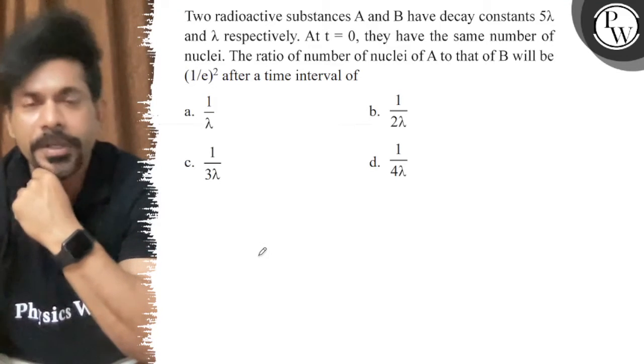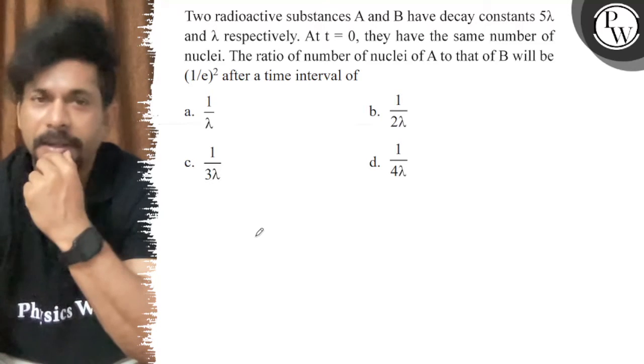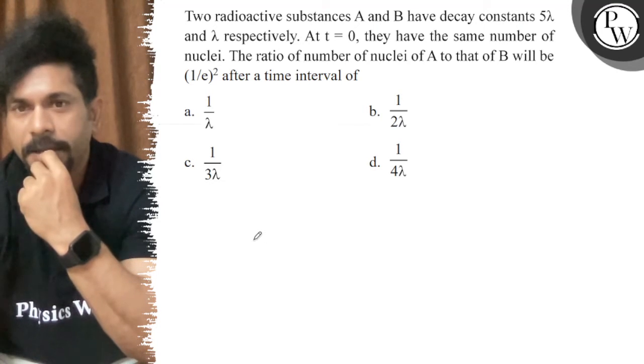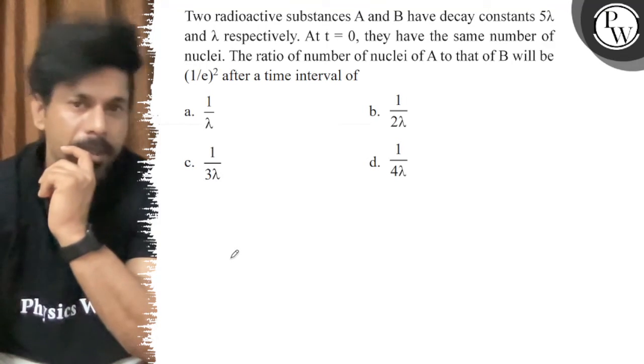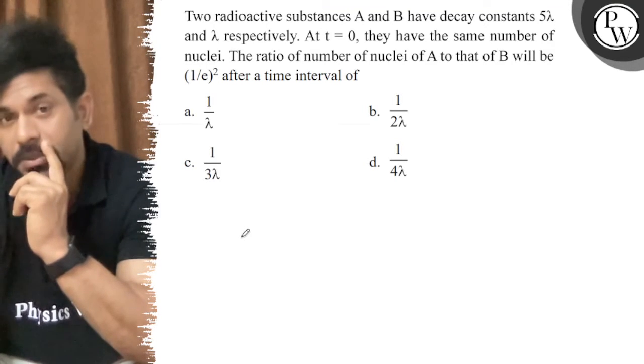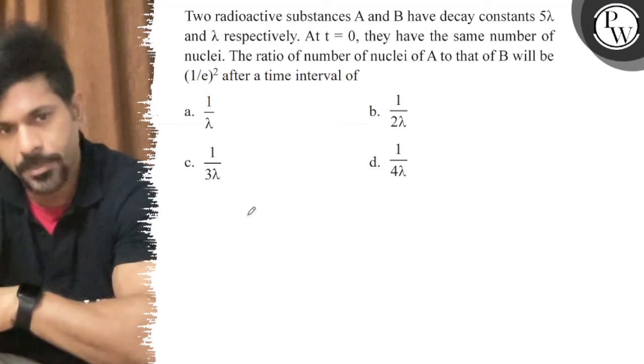Let's see the question: Two radioactive substances A and B have decay constants 5λ and λ respectively. At t=0, they have the same number of nuclei. The ratio of number of nuclei A to that of B will be 1/e² after a time. Options: 1/λ, 1/2λ, 1/3λ, 1/4λ.